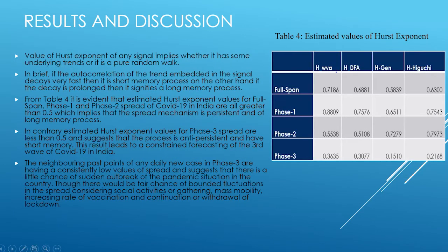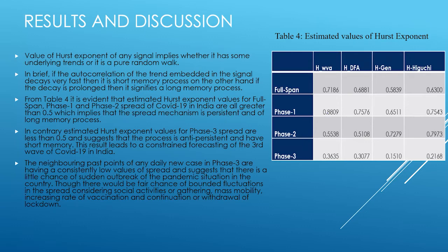We calculated the Hurst exponents using four different methods. The value of the Hurst exponent indicates whether a signal has underlying trends or represents a pure random walk. From table four, it is evident that the Hurst exponents for the full span, phase one, and phase two are greater than 0.5, implying that the spread mechanism is persistent and follows a long memory process. In contrast, for phase three it is less than 0.5, suggesting the process is anti-persistent with short memory.